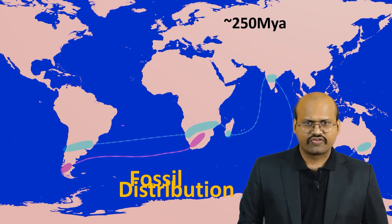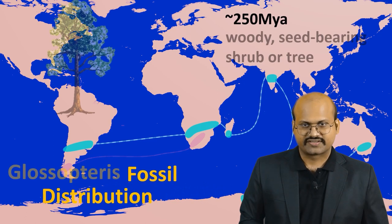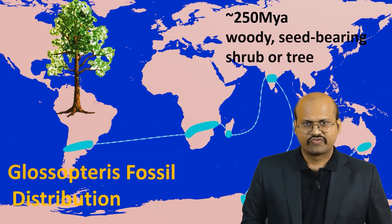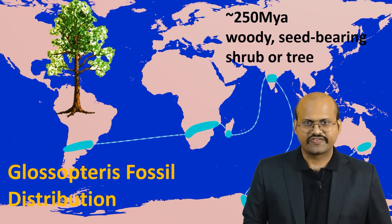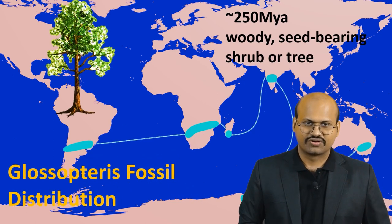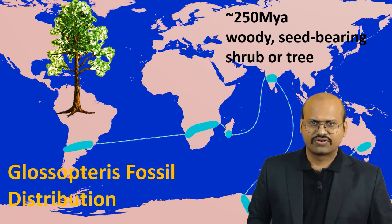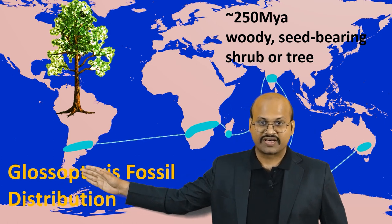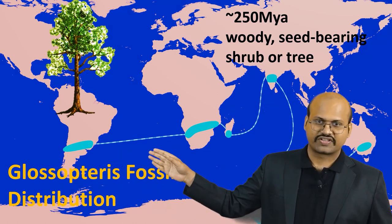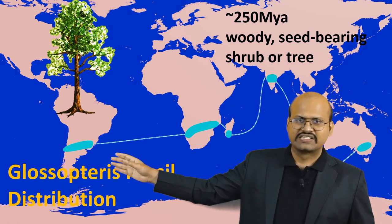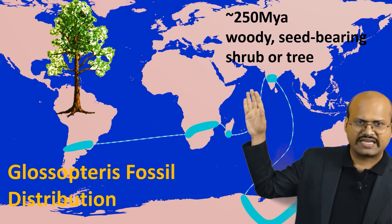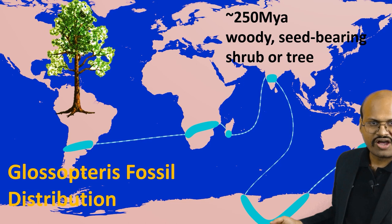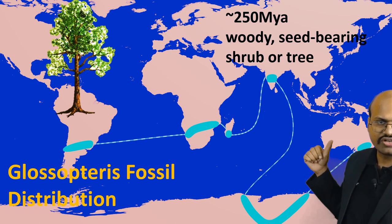Fossils of Glossopteris, a plant which existed around 250 million years ago, can be found on all continents in the Southern Hemisphere — Africa, South America, India, Antarctica and Australia.